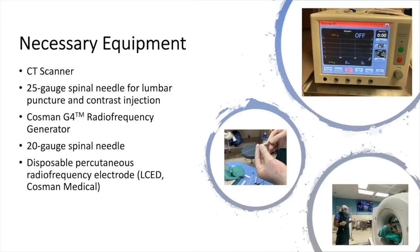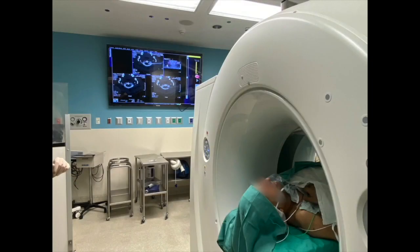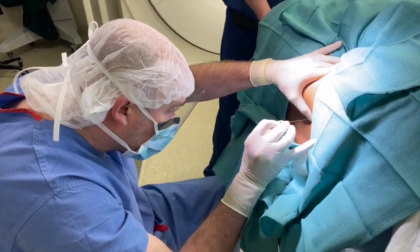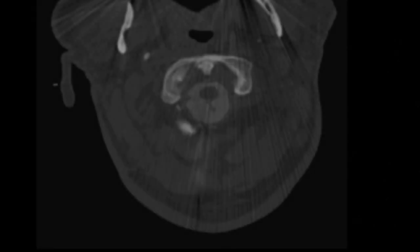To perform the procedure you will need a CT scanner, a radio frequency device, a 20-gauge needle, and a disposable percutaneous radio frequency electrode. The procedure is done in the interventional CT suite. Thirty minutes prior to the procedure, a myelogram is performed via lumbar puncture. Afterwards, the patient is placed in the Trendelenburg position to aid in contrast distribution in order to better visualize the spinal cord. Alternatively, this can be done after placement of the cannula during the C1-2 puncture.